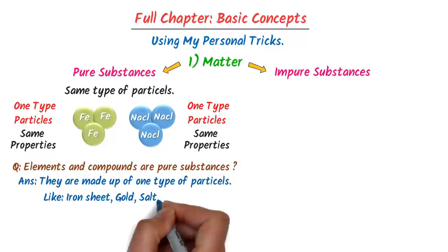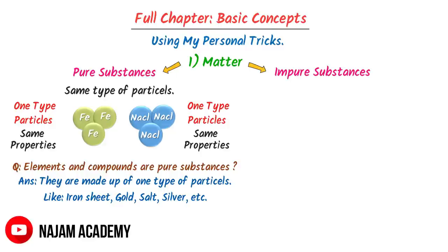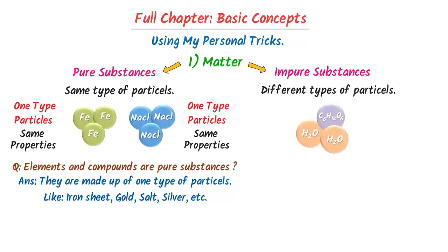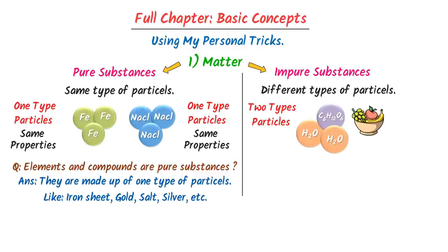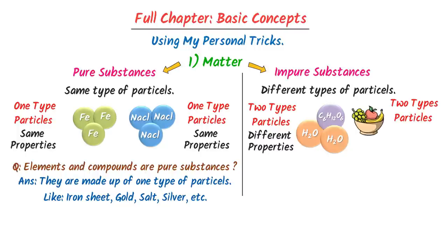On the other hand, impure substances are those that contain different types of particles. For example, consider salt solution and salad. Salt solution contains two types of particles with different properties, so it is an impure substance. In salad, there are more than two types of particles with different properties, so salad is also an impure substance.